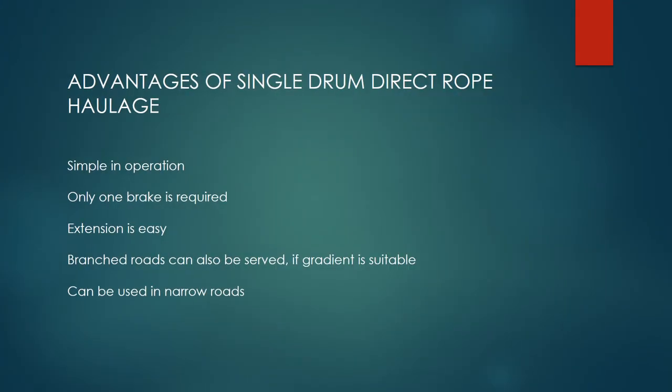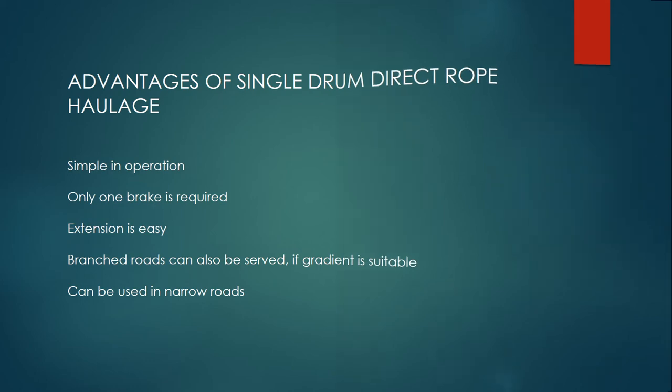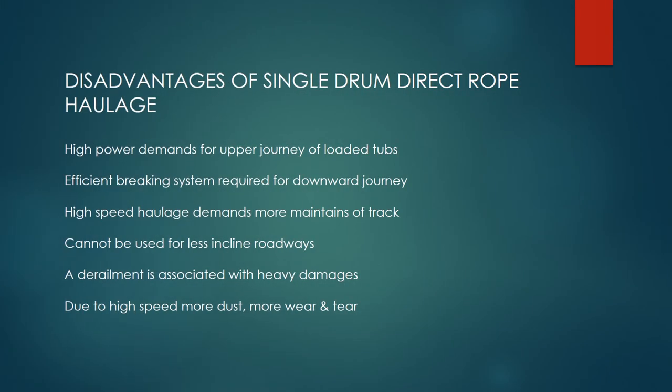Advantages of Single Drum Direct Rope Haulage: It is simple in operation. Only one brake is required. Extension is easy. Branched roads can also be served if the gradient is suitable. It can be used in narrow roads.